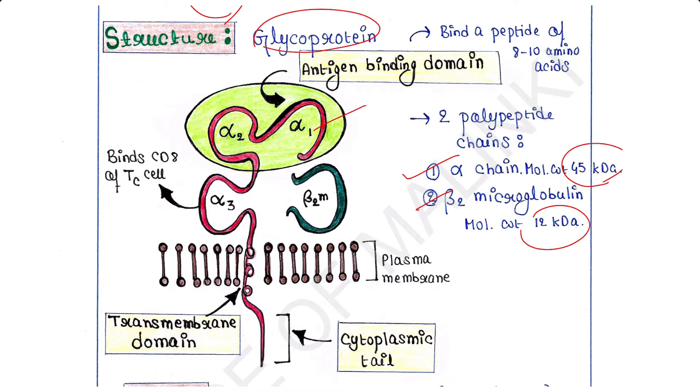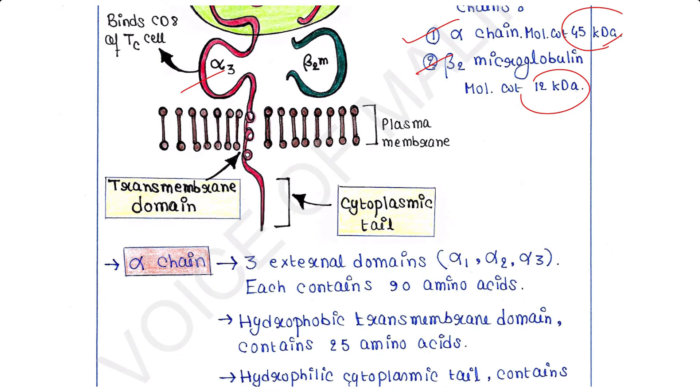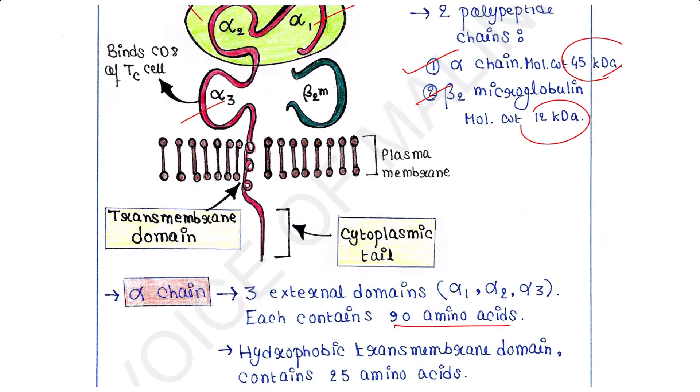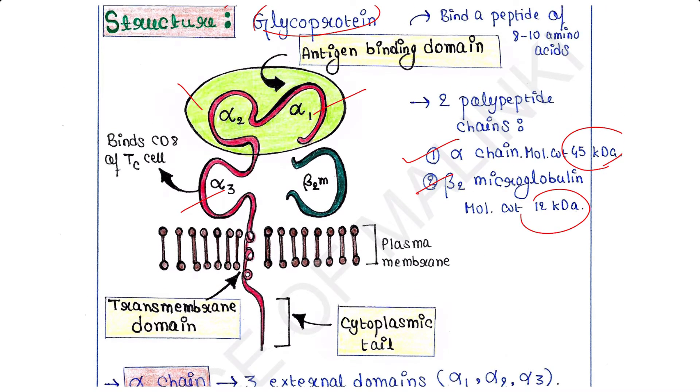The alpha chain contains three external domains: alpha 1, alpha 2, and alpha 3. Three external domains are present in the alpha chain. Each of them contains 90 amino acids. So alpha 1, alpha 2, and alpha 3, each contains 90 amino acids.